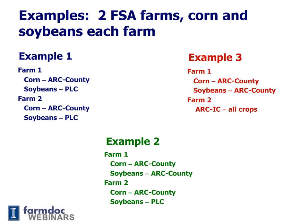In example three, on farm one both corn and soybeans are enrolled in ARC County. On farm two, ARC IC is used. Once a decision is made to use ARC IC, all crops on that FSA farm are enrolled in ARC Individual.